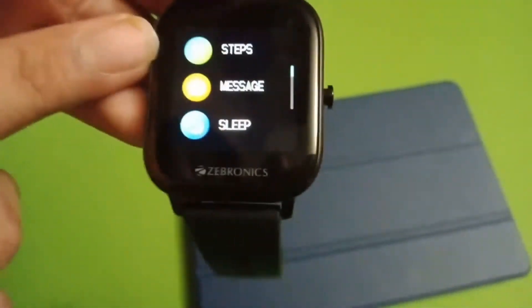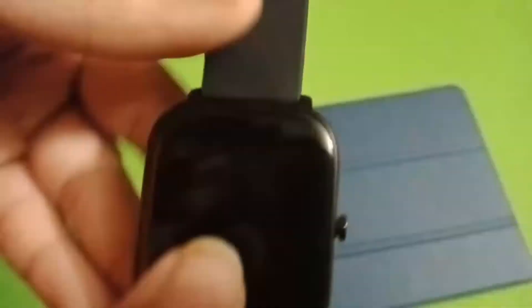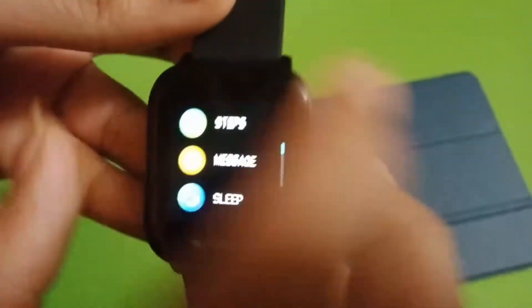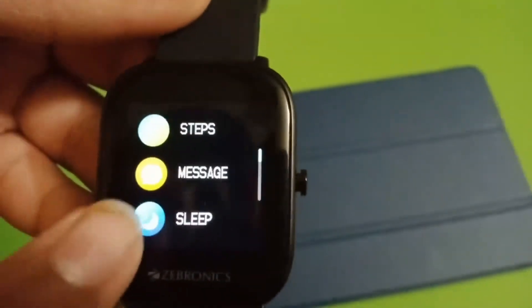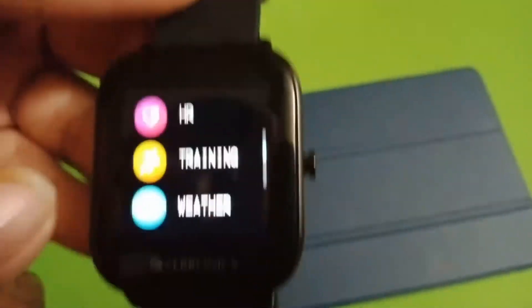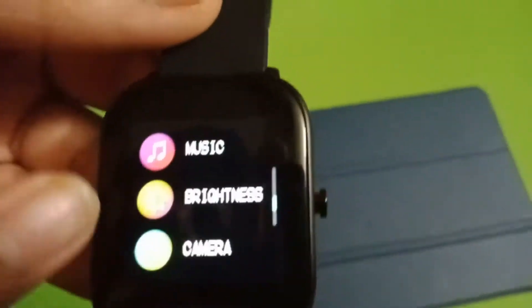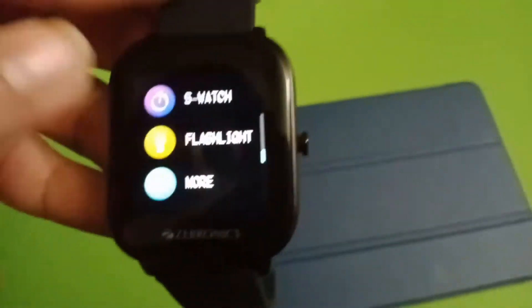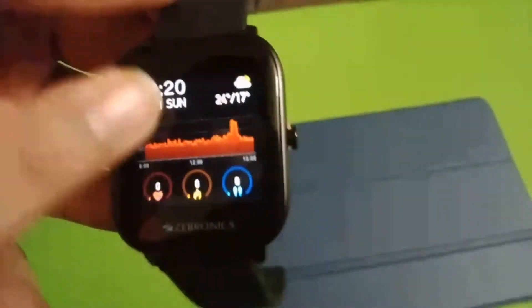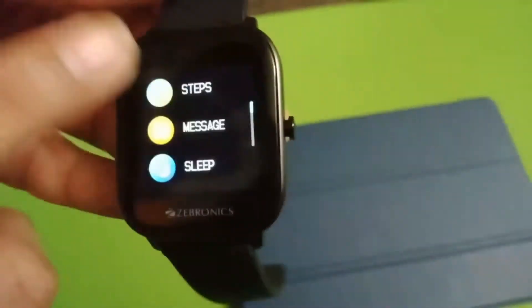When you swipe down you have steps, and messages, sleep, heart rate, training, weather, music, brightness, and remote capture. Swatch means stopwatch, flashlight, and settings, and more. In the more you have the same options as in the settings.